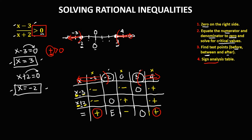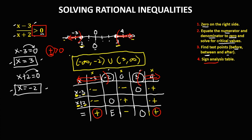Therefore, in interval notation, the solution of this rational inequality is from negative infinity to negative 2, union positive 3 to positive infinity. This is the solution of this rational inequality. Observe that in the interval notation, we can only see the critical values: negative 2 and positive 3.